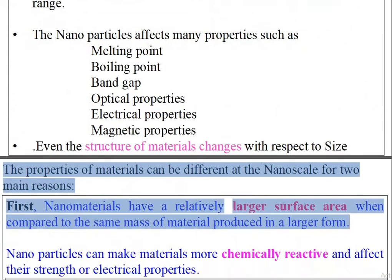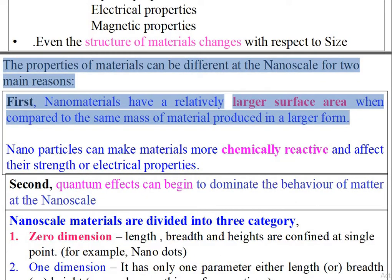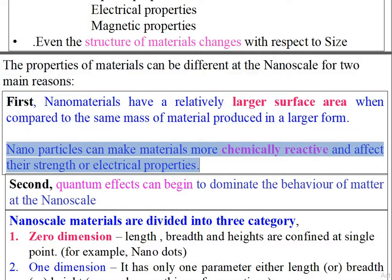The properties of materials can be different at the nanoscale for two main reasons. First, nanomaterials have a relatively larger surface area when compared to the same mass of material produced in a larger form. Nanoparticles can make materials more chemically reactive and affect their strength or electrical properties.